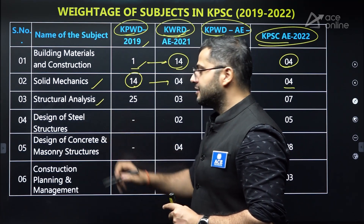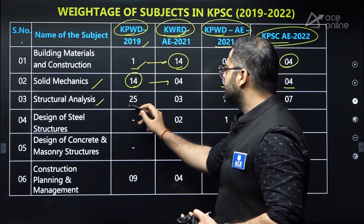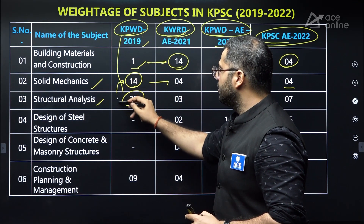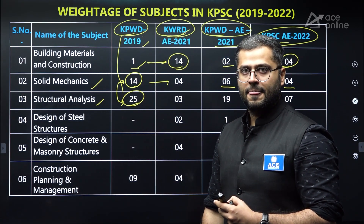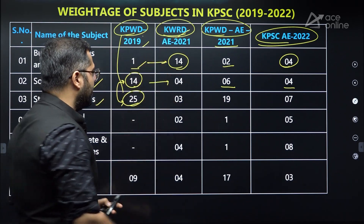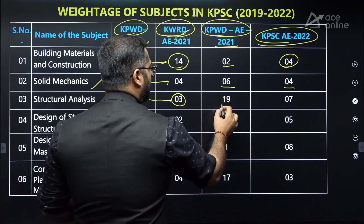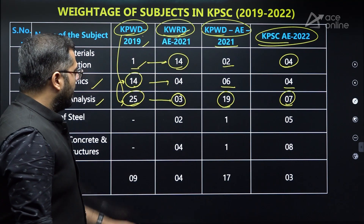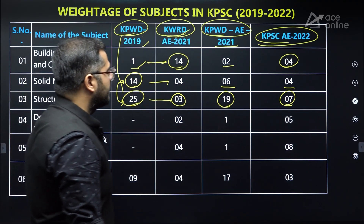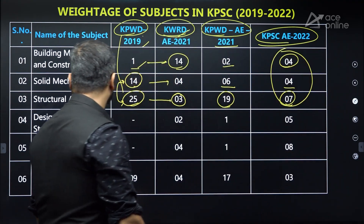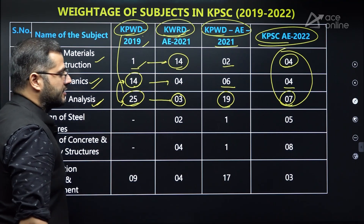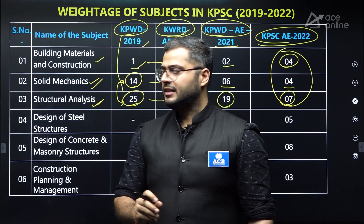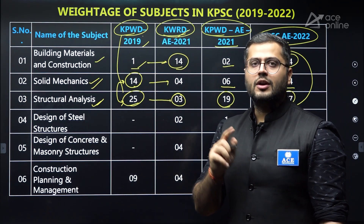After this comes structural analysis — one of the most important subjects in civil engineering. In KPWD, huge weightage has been seen: 25 questions. So in KPWD, it is quite clear that high weightage has been given to strength of materials and structural analysis. But in KWRD, only three questions were asked; KPWD AE 2021, 19 questions; and KPSCA, only seven questions. In KPSCA examinations, the numbers are clearly very less for building materials, strength of materials, and structural analysis. These three subjects are considered very important. Large variation is seen, so you cannot leave this subject.